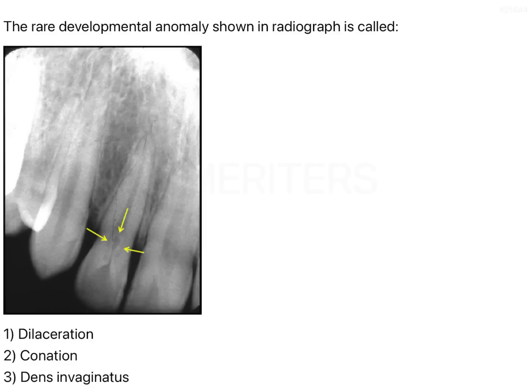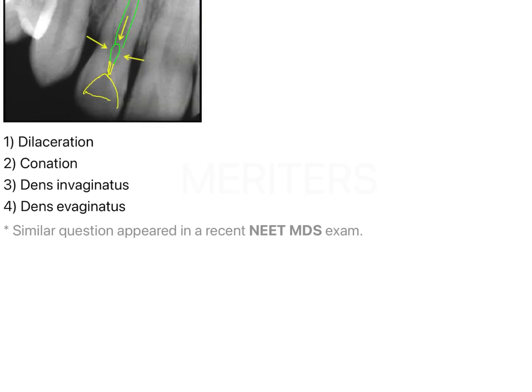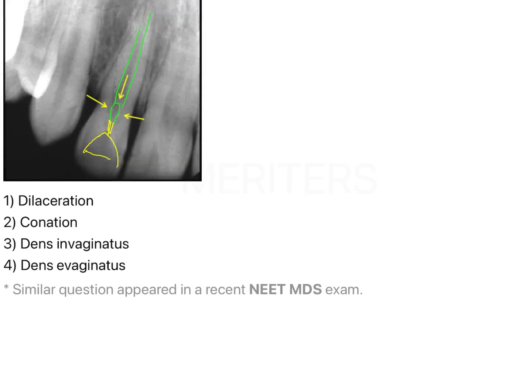The rare developmental anomaly shown in the radiograph is called dens invaginatus. What you can see in this radiograph is the crown, and from the crown you have the pulp tissue. There is an invagination, then a sudden increase in the canal space, and then again you have the canal. This typical appearance is very characteristic of dens invaginatus.